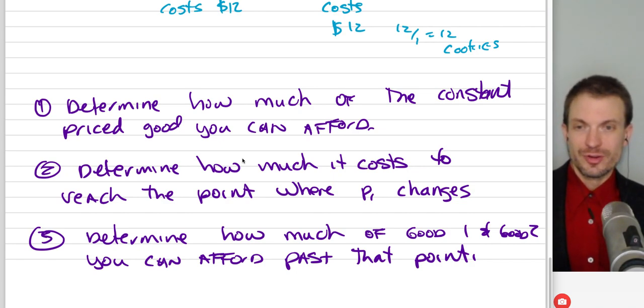You want to determine how much it'll cost to reach the point where the price of good one changes and then how much money you have left over. So that's going to be this part. Determine how much of good one and good two you can afford past that point.